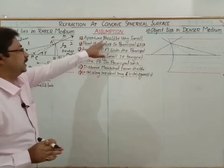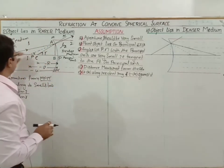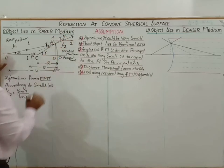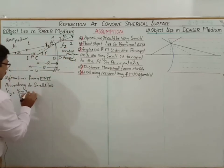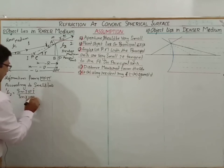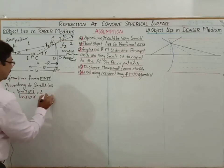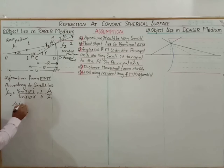Since the aperture is very small, the angle of incidence is also very small. With small aperture, both angle i and angle r are very small, so sine i ≈ i and sine r ≈ r. Therefore the relation becomes i by r equals mu2 by mu1. Cross multiplying gives: mu1 · i = mu2 · r — this is equation number 1.